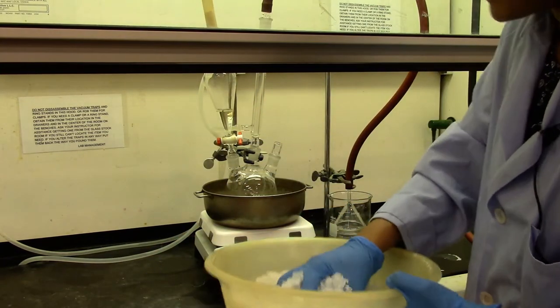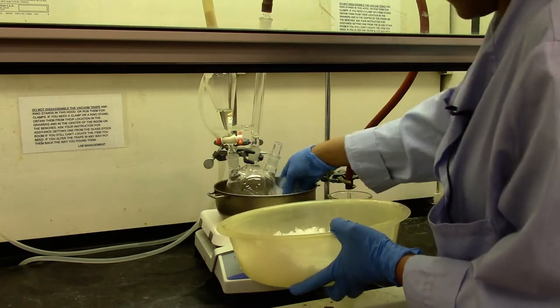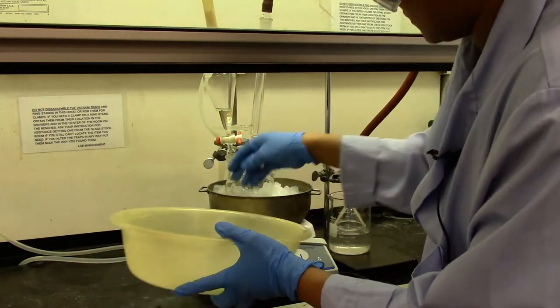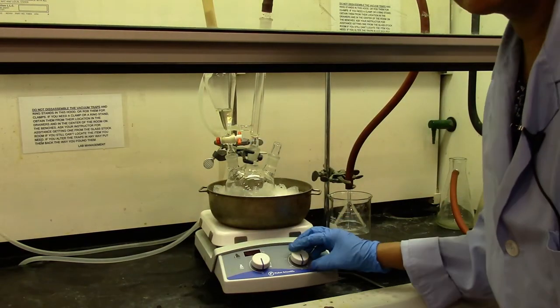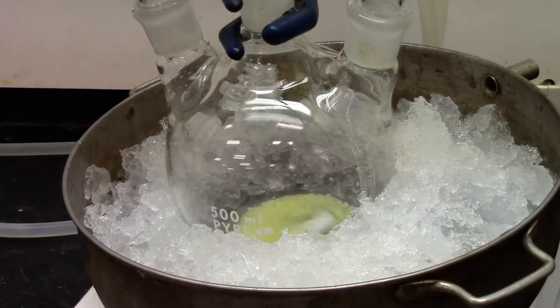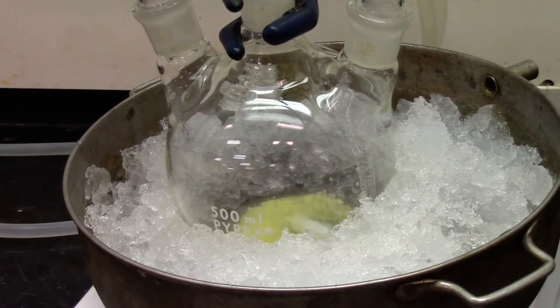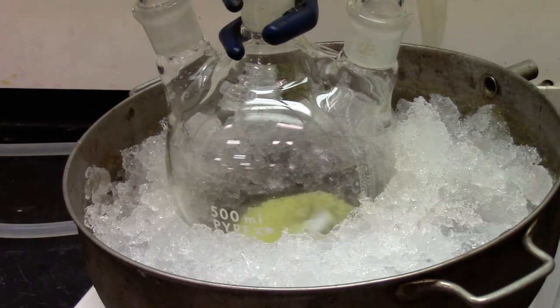I'm going to place some ice in my bath. And I'm going to start stirring the solution. We will stir until a fine suspension of aluminum chloride with the dichloromethane solvent has been formed.